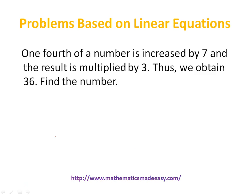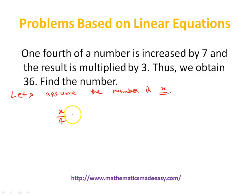Moving to the next question: 1/4 of a number is increased by 7, and the result is multiplied by 3 — thus we obtain 36. Find the number. Let's assume the number is x. So 1/4 of a number is x/4, increased by 7 gives (x/4 + 7), and that result multiplied by 3 equals 36. We have found a linear equation in x.